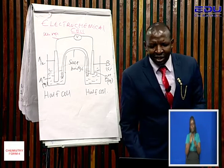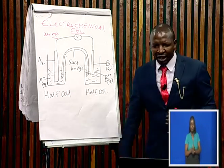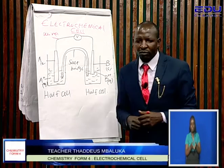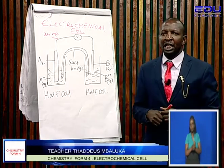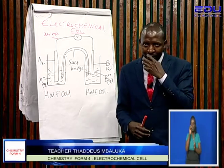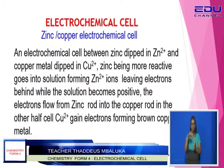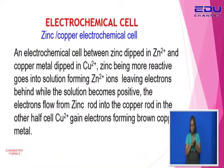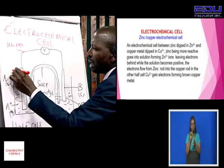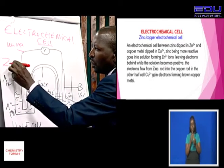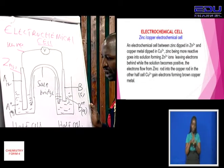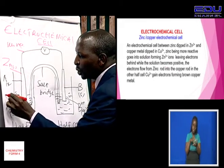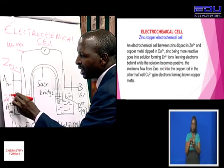Let's look at an example of an electrochemical cell — for instance, the zinc-copper electrochemical cell. We have said that we have two cells. In a zinc-copper electrochemical cell, on one side we are going to put zinc solid, and it will be dipped in solution of zinc ions, aqueous. If you have a metal A, it must be dipped in solution containing ions of A. So if you have zinc metal, it must be dipped into solution of zinc ions.